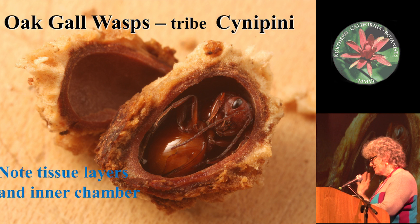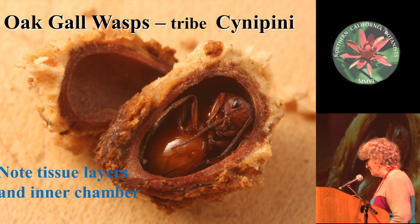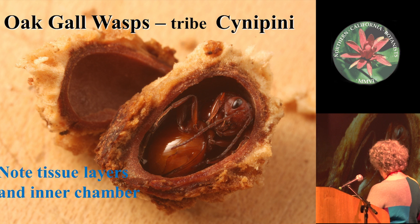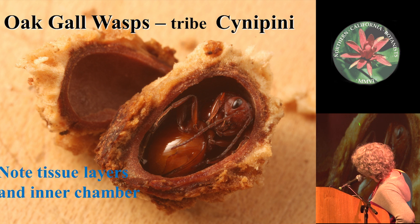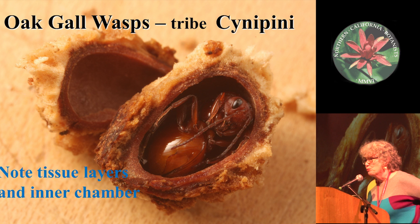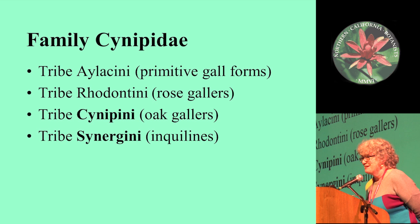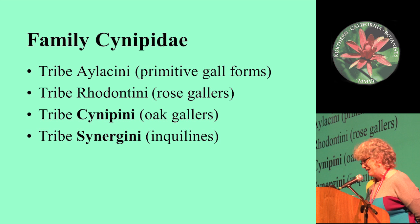Here's a picture of a typical oak gall from a wasp, and this shows tissue layers. The tissue layers have an internal chamber and then tissue on the outside. Some are much more complex than this. There are several tribes in the family Cynipidae, but we're only going to be looking at two: the oak gallers, and the inquilines, the Cynipinae.